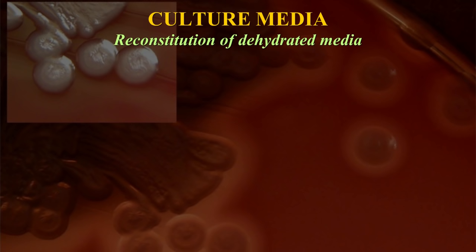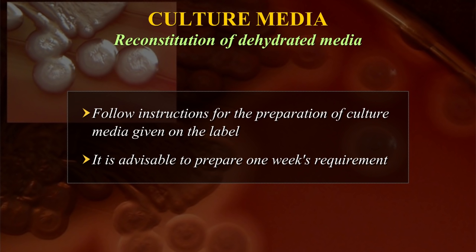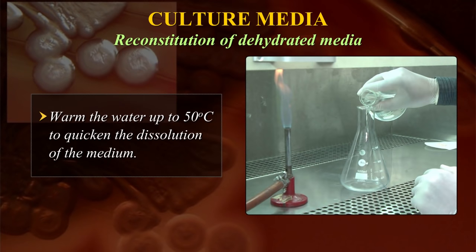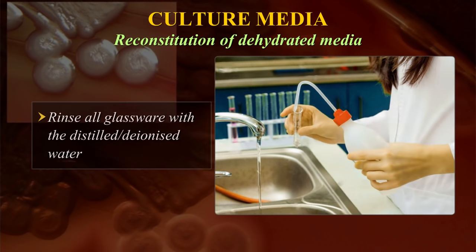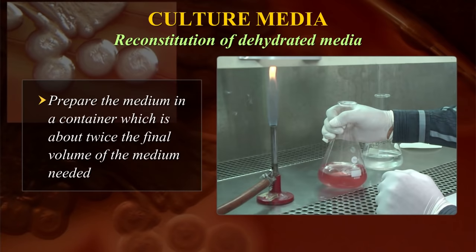Reconstitution of dehydrated media. Follow instructions for the preparation of culture media given on the label of each bottle. It is advisable to prepare one week's requirement only. Always use freshly prepared distilled or deionized water. Warm the water up to 50 degrees centigrade to quicken the dissolution of the medium. Rinse all glassware with distilled or deionized water and make sure the vessels are clean. Prepare the medium in a container which is about twice the final volume of the medium needed so that the dry powdered medium can be adequately mixed.